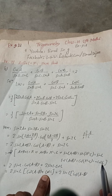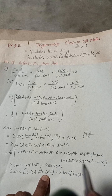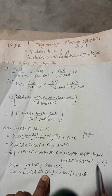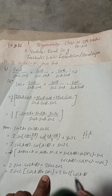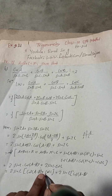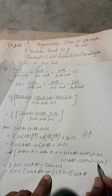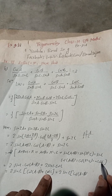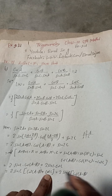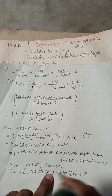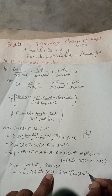Since cos C = −cos(A+B), in place of cos C we write −cos(A+B). So the bracket becomes cos(A−B) − cos(A+B). And we know that cos(A−B) − cos(A+B) = 2 sin A · sin B.